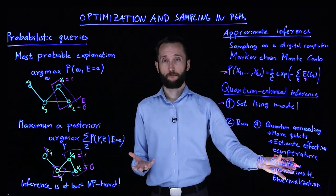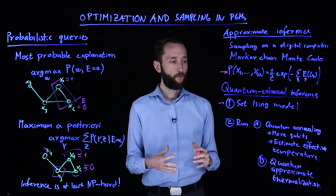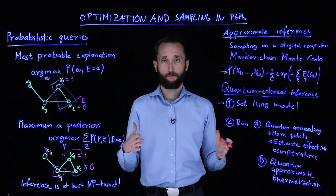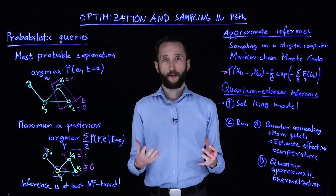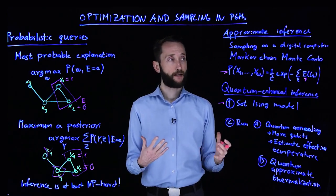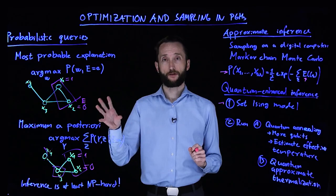Or you can run the gate model quantum approximate thermalization protocol, which needs an ancilla system, which means that you have to use a lot more qubits than what you are actually interested in. And they are on a smaller scale, but that's an option too. Whichever method you choose, you can accelerate some of these Markov networks at training and also during inference.